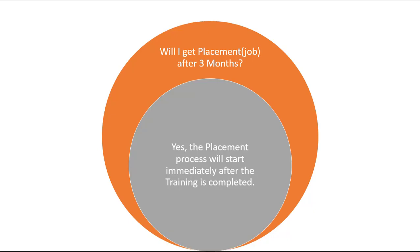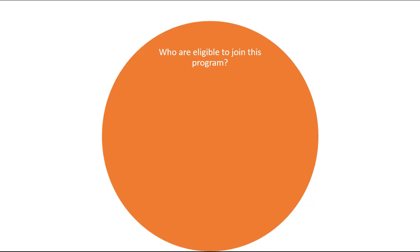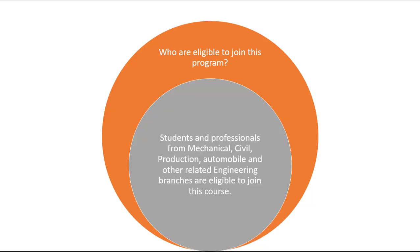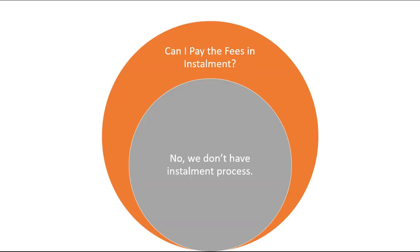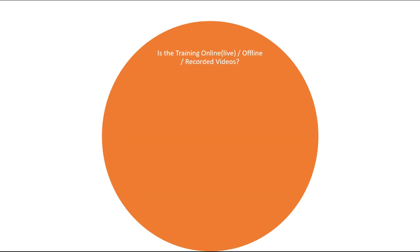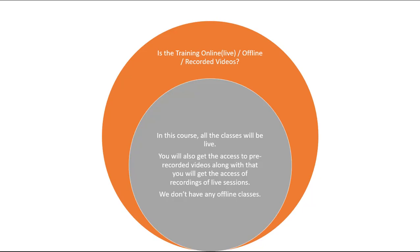Will I get placement after 3 months? Yes, the placement process will start immediately after training is completed. Who is eligible? Students and professionals from mechanical, civil, production, automobile, and other related engineering branches are eligible. Can I pay fees in installments? No, there is no installment process. Is this training program live, online live, offline or recorded? All classes will be live interactive. You will also get access to pre-recorded videos and recordings of live sessions. There are no offline classes.